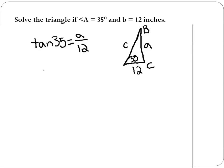To solve, it's really easy. Just multiply both sides of that equation by 12 to get a by itself. So we have 12 tangent 35 equals a, and then go ahead and type that in your calculator. Make sure it is in degree mode, and you're going to get a equals 8.402.